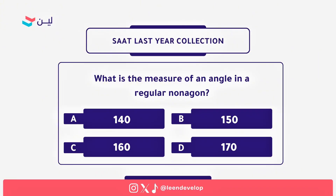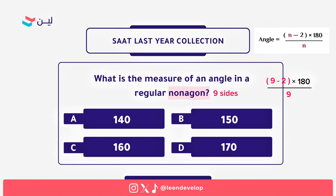The next question: what is the measure of an interior angle in a regular nonagon? The formula for the interior angle of any regular polygon is: (n minus 2) times 180, divided by n. A nonagon has 9 sides, so substituting n = 9: (9 minus 2) × 180 ÷ 9 = 7 × 180 ÷ 9 = 1260 ÷ 9 = 140 degrees. The answer is A.